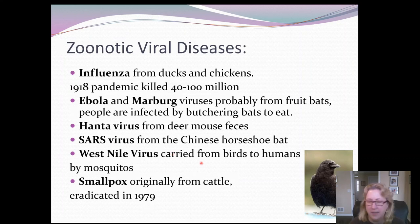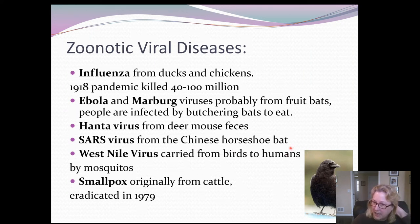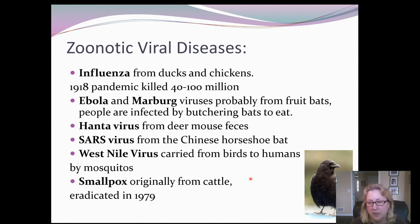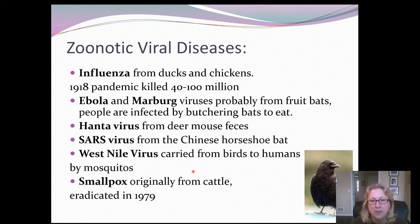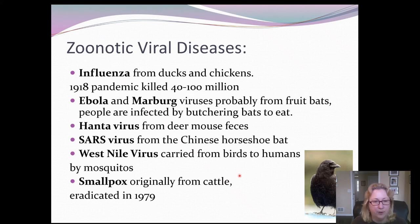The first SARS epidemic in China was traced back to the Chinese horseshoe bat. There was a large cave popular with tourists where these bats were, and that cave is now off limits to tourists. West Nile virus is primarily a bird virus spread by mosquitoes, not directly human to human. It has mostly affected people who are already medically vulnerable, like the elderly, and doesn't seem to have much effect on healthy or younger people.